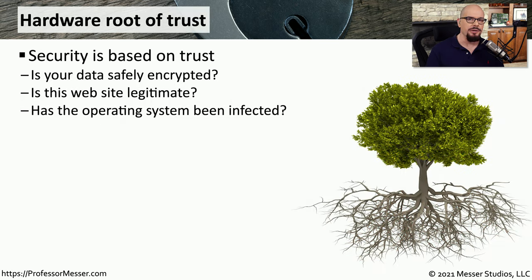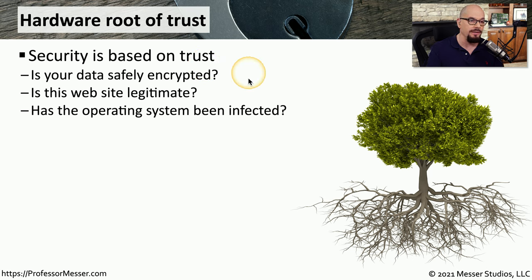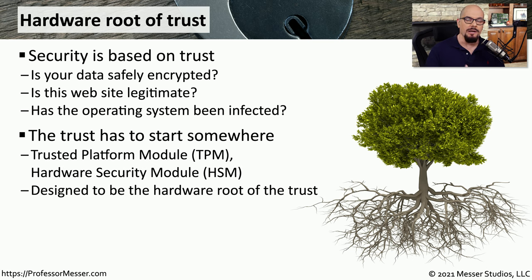Anything we do with IT security is based on a level of trust we have with the operating systems we're using and the software we're loading on them. We're concerned about our data and want to be sure it's safely encrypted. We want to trust that the websites we visit are legitimate, and that our operating system has not been infected. But this isn't a blind trust — we put specific security controls in place to make sure we can rely on these systems.